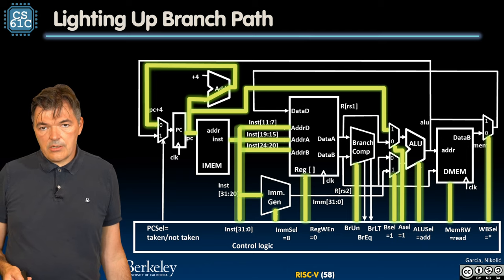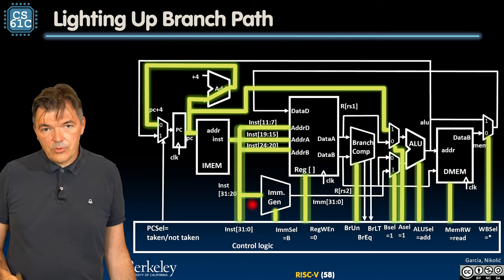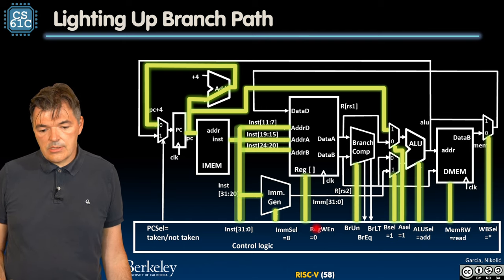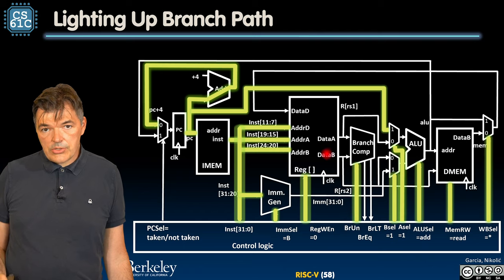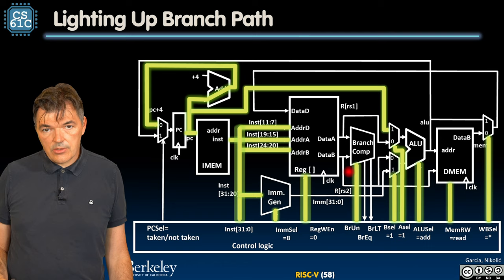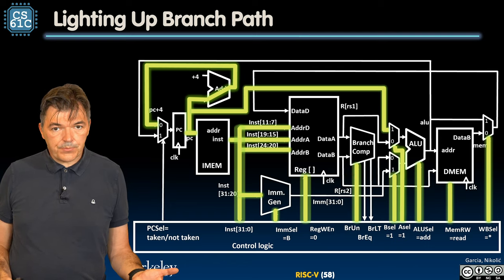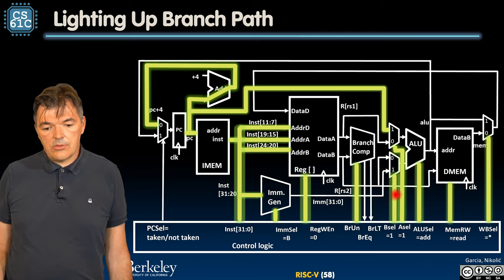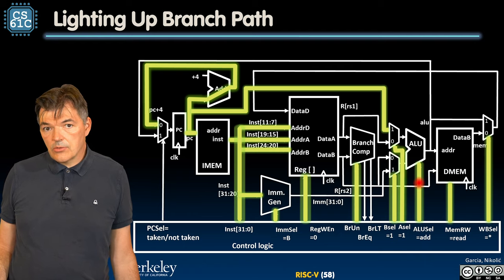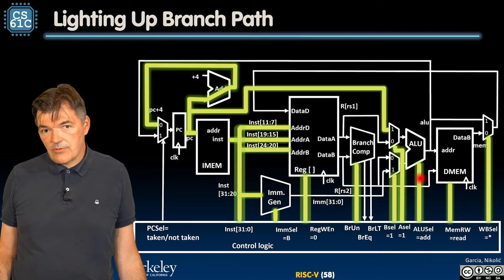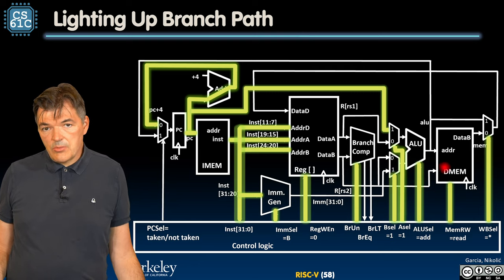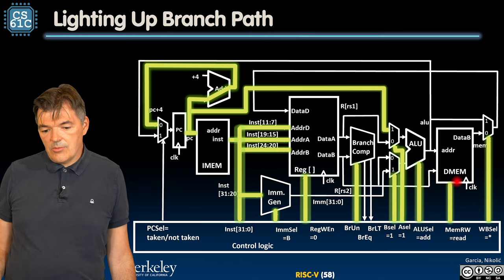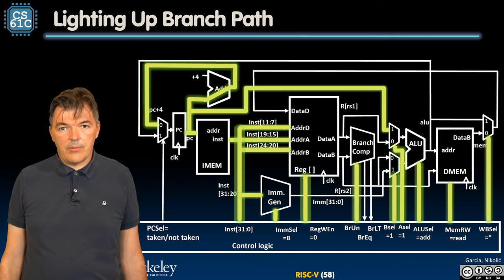We don't know what is going to be the outcome of the branch until we perform the comparison. So we set the control here to correspond to the branch. So immediate select is B, register write enable is zero. We send also a signal to the branch comparator, should we have unsigned or signed comparison, set the appropriate inputs to the multiplexers. ALU is still going to do the addition of, this time, the program counter value with the immediate and memory is going to be set to read. We are not going to write to it. We don't want to even accidentally write to it and we are going to disregard any output that might come out of that.